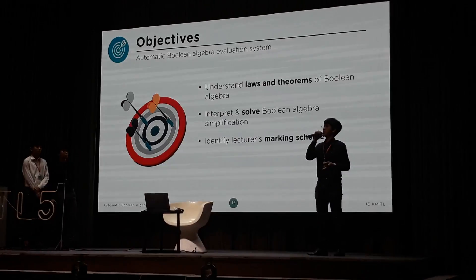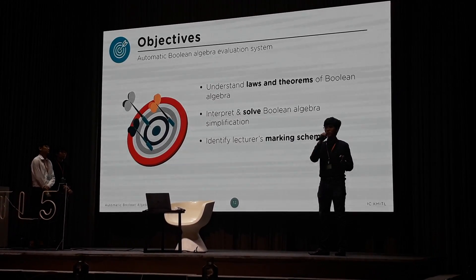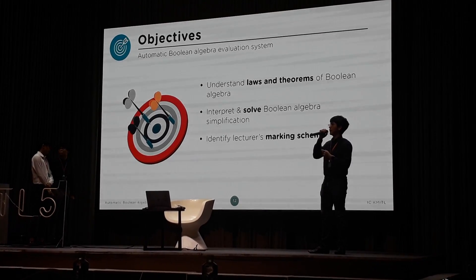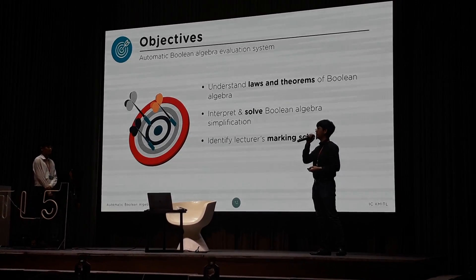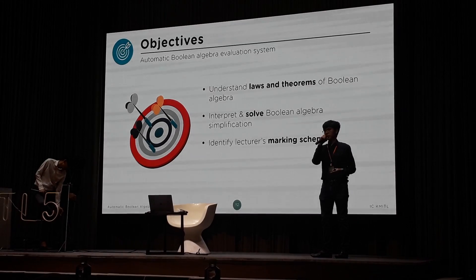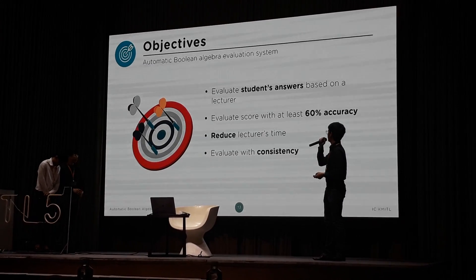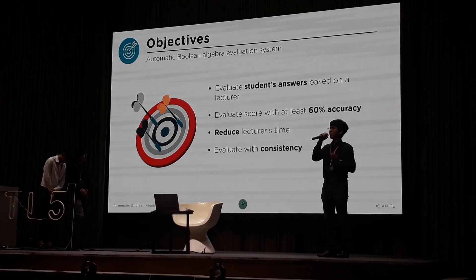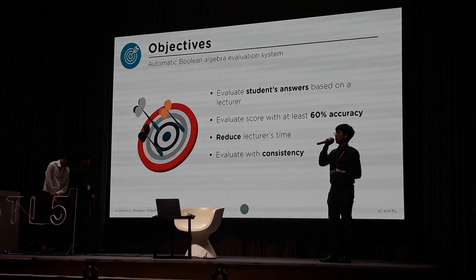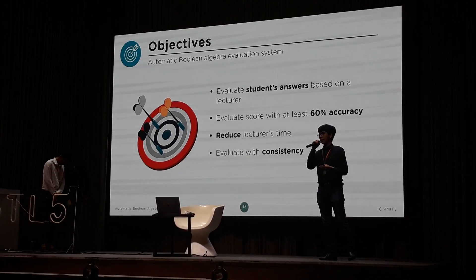Next we will talk about our objectives to achieve the methodology. We have to implement a system that is able to understand the laws and theorems of Boolean algebra expressions. Since our system can understand those theorems, it can interpret and solve Boolean algebra simplification. After that, we can identify the marking scheme of each specific lecturer for how they are going to mark the Boolean algebra exam, and evaluate student answers based on that marking scheme. We expect results to yield at least 60% accuracy.